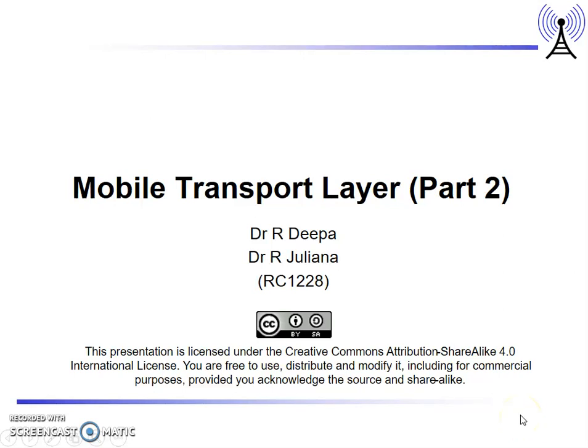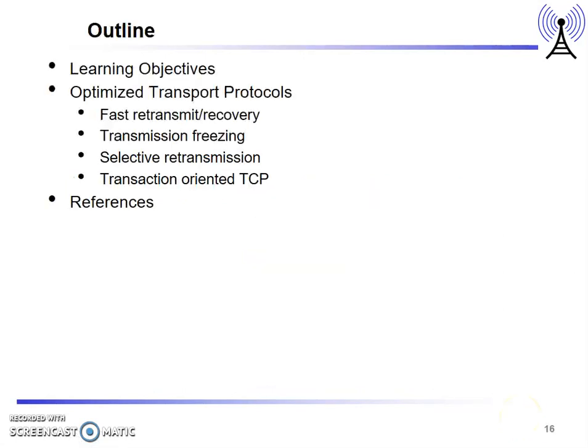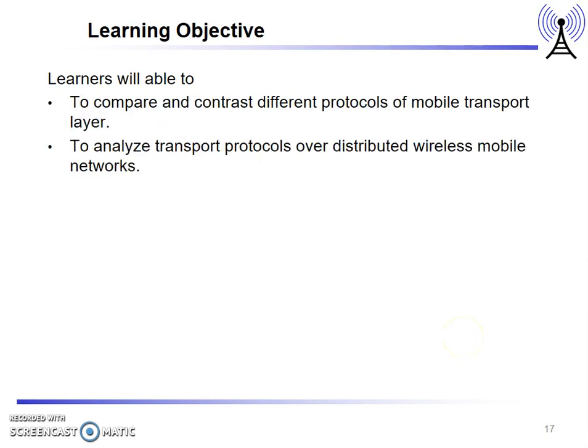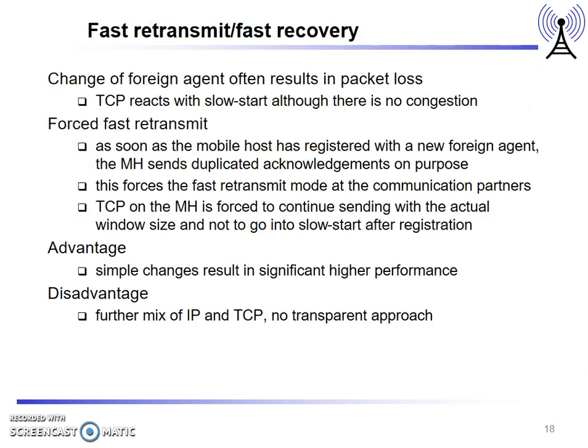Welcome to part two of the mobile transport layer session. In part one we covered classical protocols. Now we will see the optimized transport layer protocols. The learning objective is that learners will be able to compare and contrast the different protocols of mobile transport layer, and analyze transport protocols over distributed wireless mobile networks.